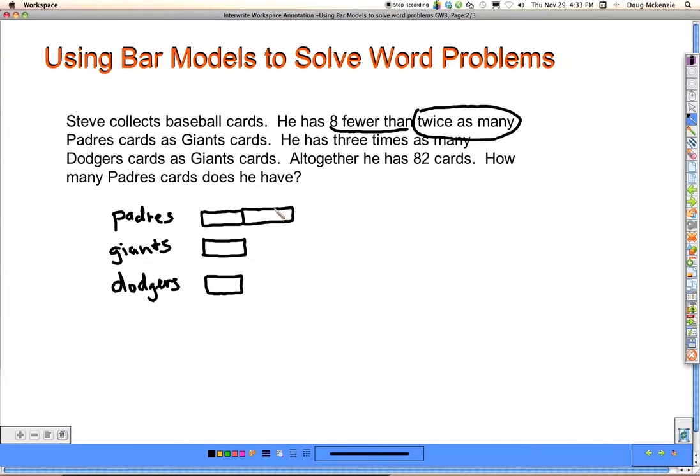But he has eight fewer than that. So we'll go ahead and take off some cards. And we'll write an eight under here showing that we're taking off eight. And then we'll check this off, we've used that fact.